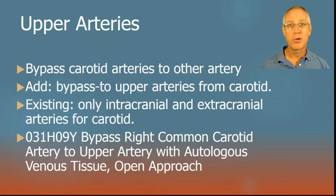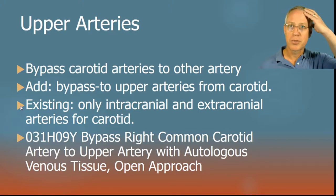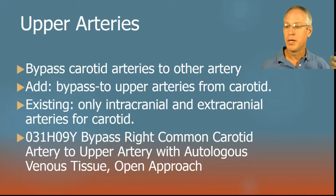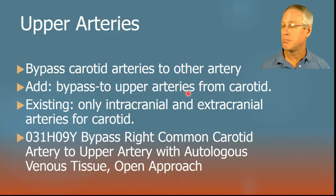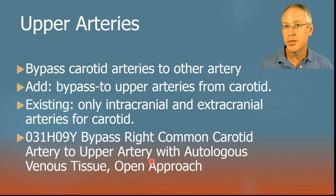Finally for upper arteries, we have the carotid arteries to other arteries. Currently we have bypassing the carotid artery to other intracranial or extracranial arteries — carotid arteries serve cerebral circulation and can be bypassed to other vessels also serving cerebral circulation. Now we're adding the option to bypass carotid arteries to some other upper artery. For example: bypass of the right common carotid to some other upper artery (not vertebral, not carotid) with autologous venous tissue.